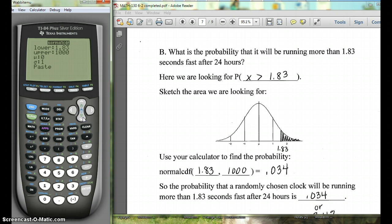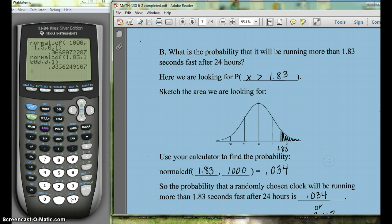This is still standard normal, so we're going to leave 0 and 1. If you had a non-standard distribution, you could change your mu and your sigma. Then paste, and then all we have to do is hit enter. Again, if you have an 83, it'll bring you to the home screen. You'll have normal CDF, parentheses, 1.83, 1,000, close your parentheses. So here we get 0.034 if we round to three decimal places.